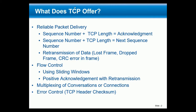TCP also offers flow control, and the way that it does flow control is using a receive window — that's a two-byte field that is part of the TCP header, and we'll take a look at that. Part of that flow control also is positive acknowledgement with retransmission that we just talked about.